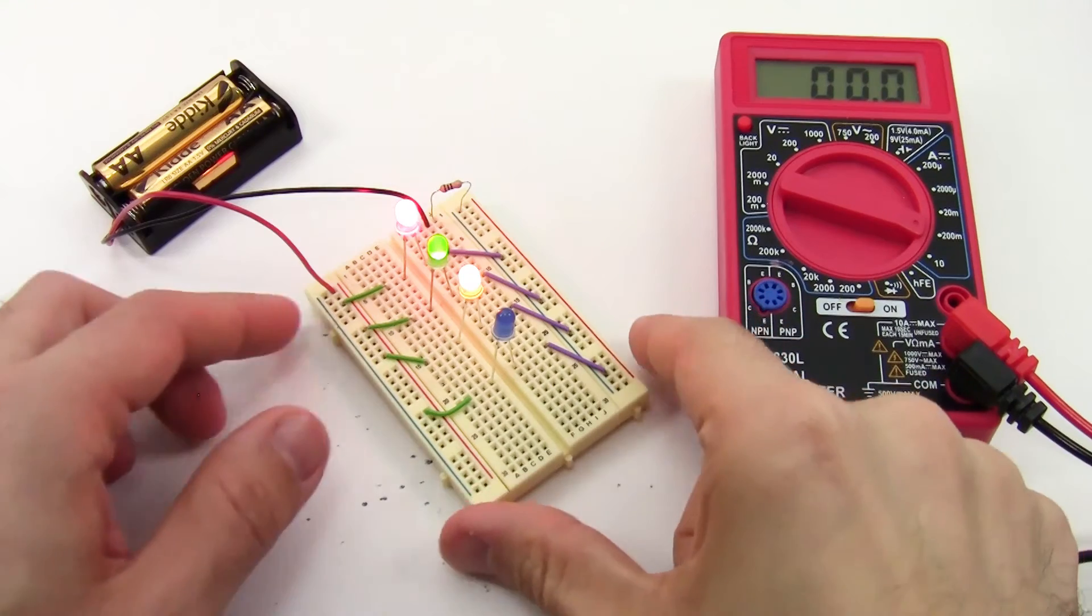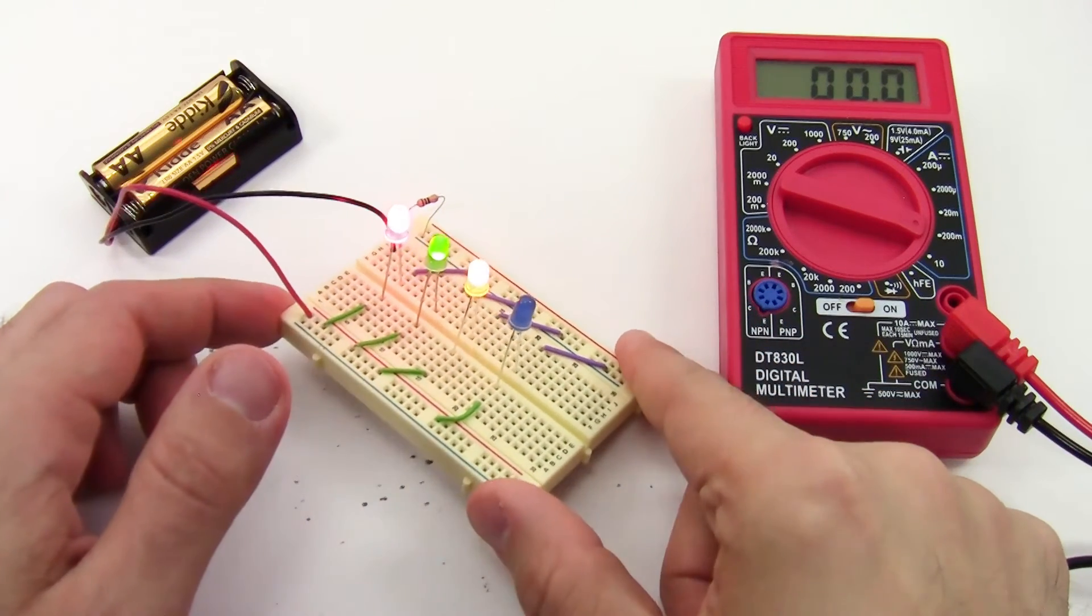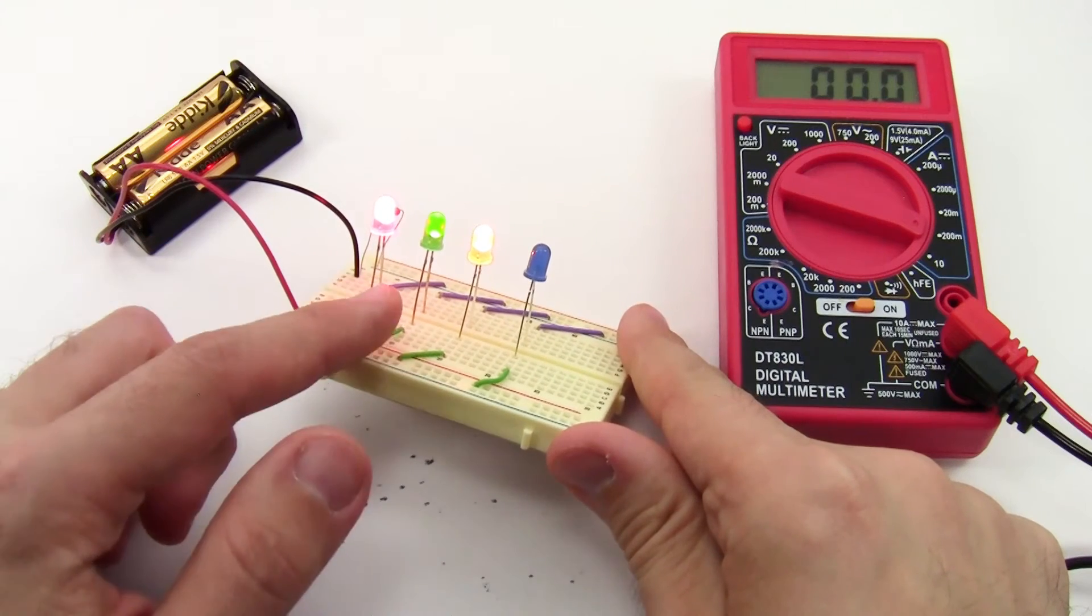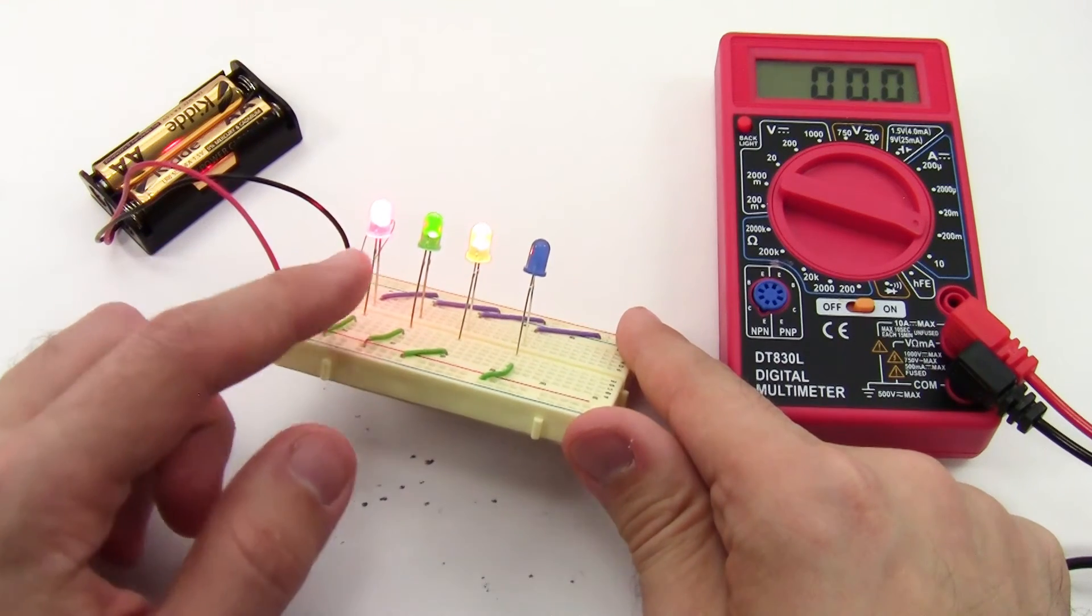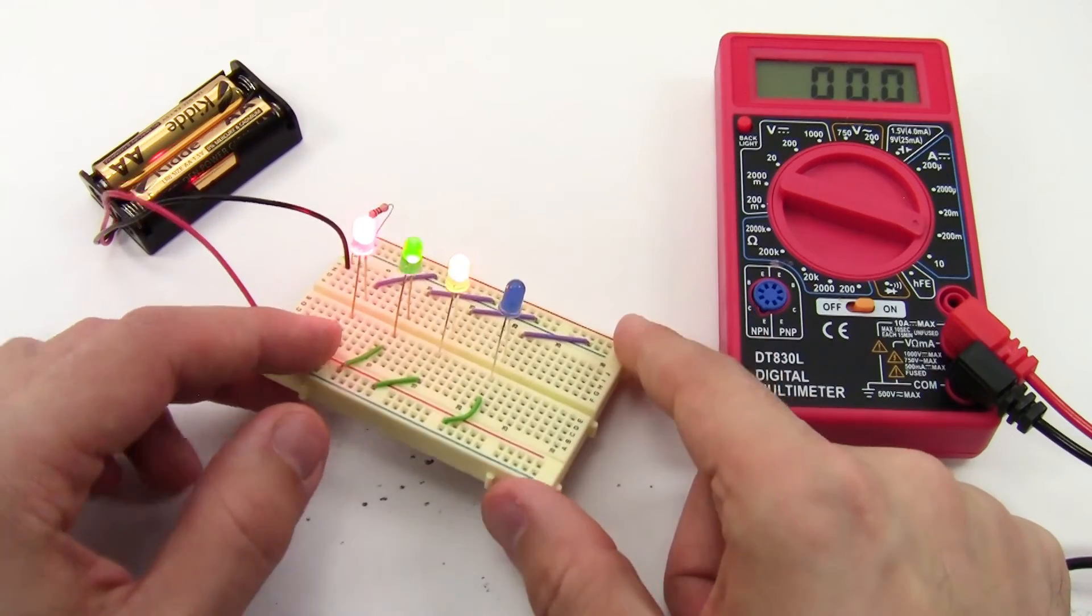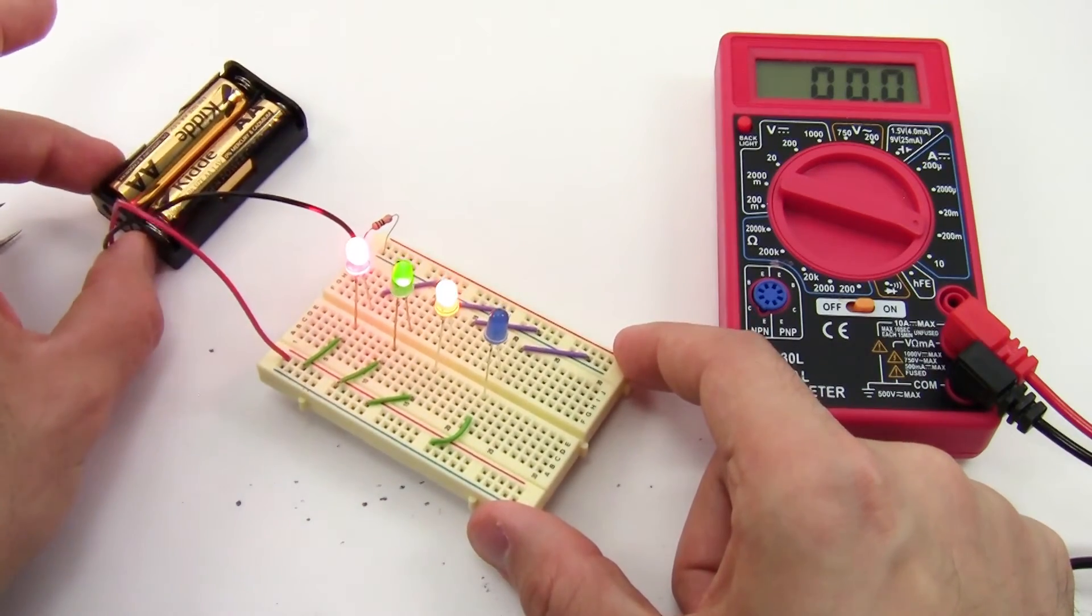Another reason to use individual resistors for each LED is if you want to combine different color LEDs in parallel. Here I have red, green, yellow, and blue LEDs in parallel, and you'll see that the red LED is much brighter than the others, and the blue LED isn't lighting up at all because it requires more than three volts.